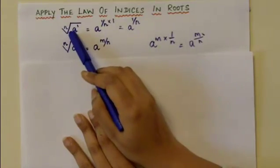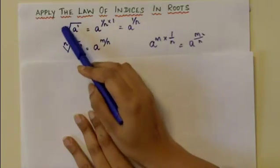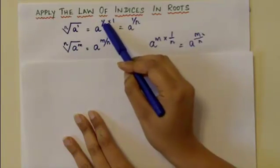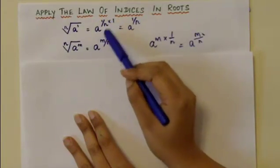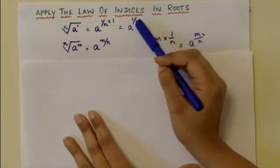The reason is that a in this case is raised to the power of 1, and the nth root, because it is written between these two lines, means a to the power of 1 over n times 1, which is equal to a to the power of 1 over n.